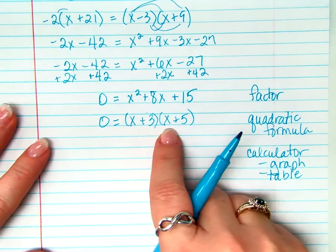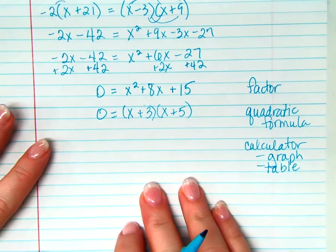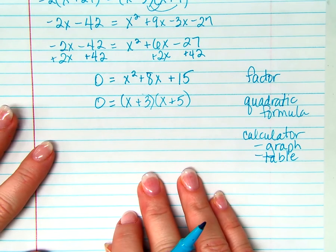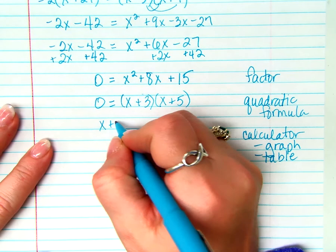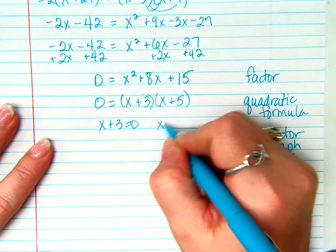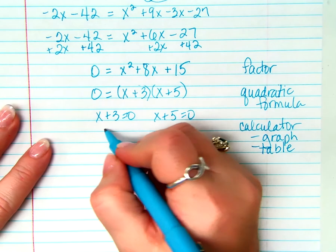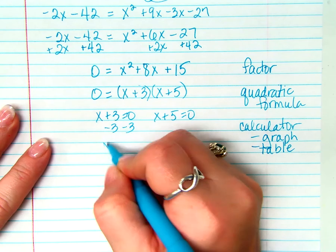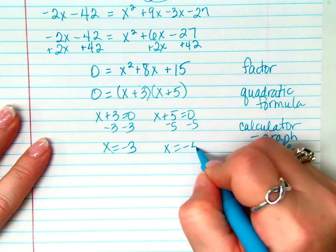If I have two factors that I'm multiplying together equal to 0, what do I do with each of those factors? I set those equal to 0. So I have x plus 3 equals 0 and x plus 5 equals 0. Now I just have to solve each one of them. Minus 3, minus 3. x equals negative 3. Minus 5, minus 5. x equals negative 5.